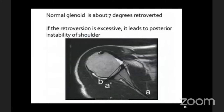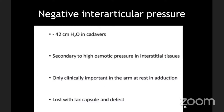This can be assessed on MRI. The negative intraarticular pressure also contributes significantly to stability, and integrity of anatomical structures is essential for this. When a structure like the labrum is torn, you lose the negative intraarticular pressure and get instability. When you repair the labrum, it is the restoration of negative pressure — not just the labrum tissue itself — that stabilizes the shoulder.